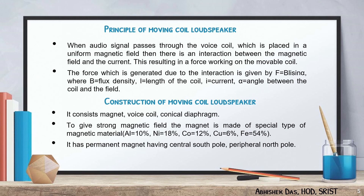Now we are going to discuss the working principle of the moving coil loudspeaker. A voice coil is placed in a uniform magnetic field. When audio current passes through the voice coil, there is an interaction between the magnetic field and the current, resulting in a force acting on this movable coil.